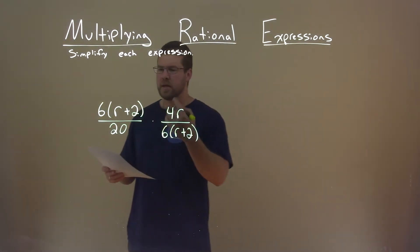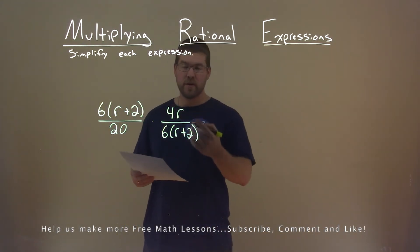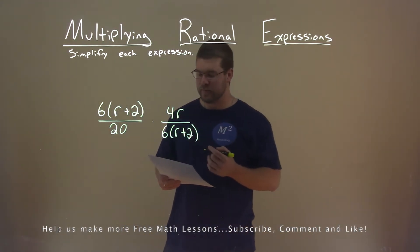We're given this expression here: 6r plus 2 divided by 20 times 4r divided by 6 times r plus 2. And we need to simplify.